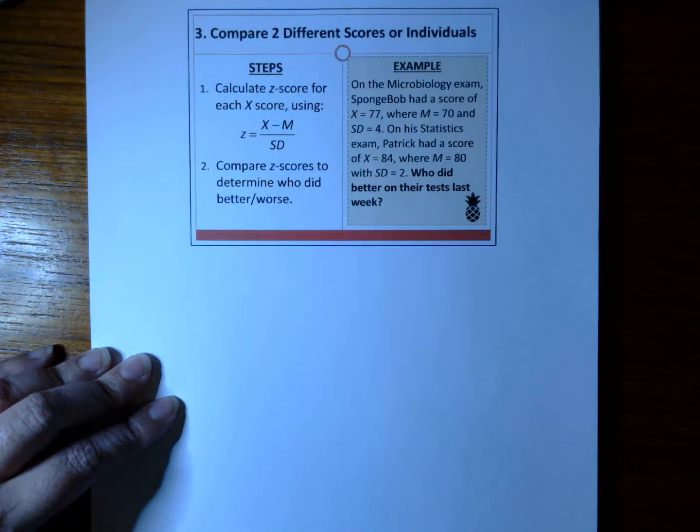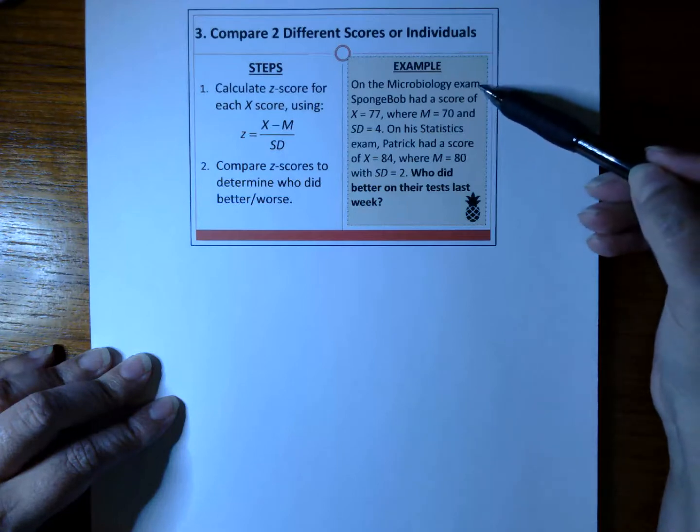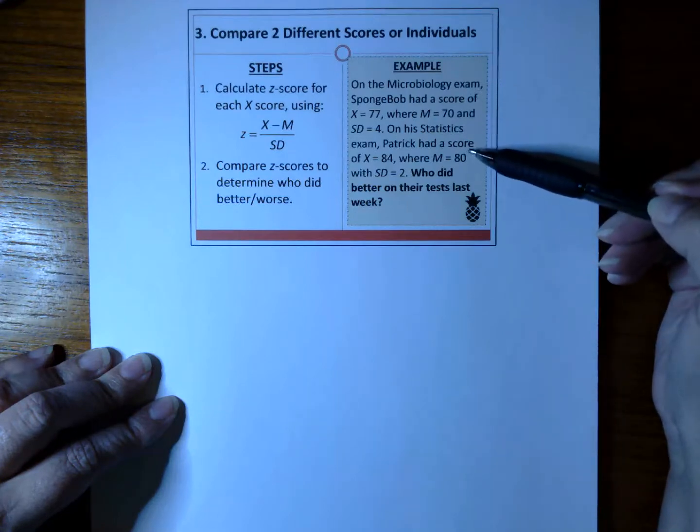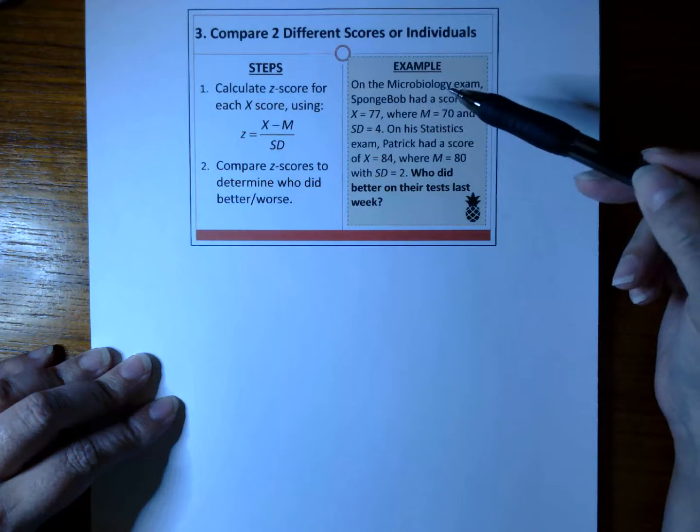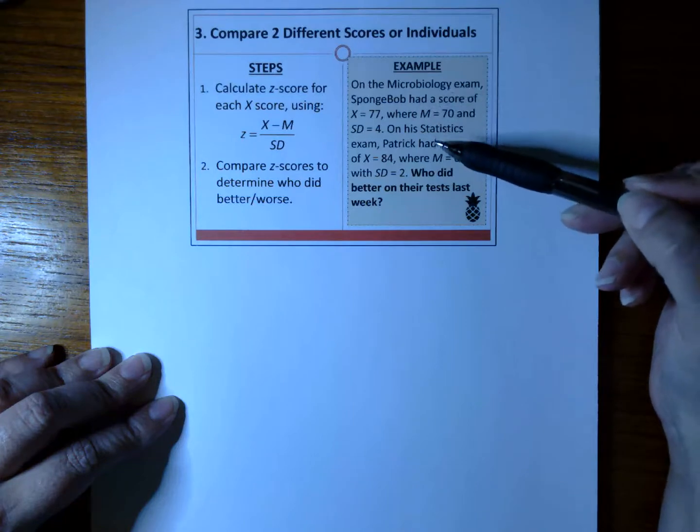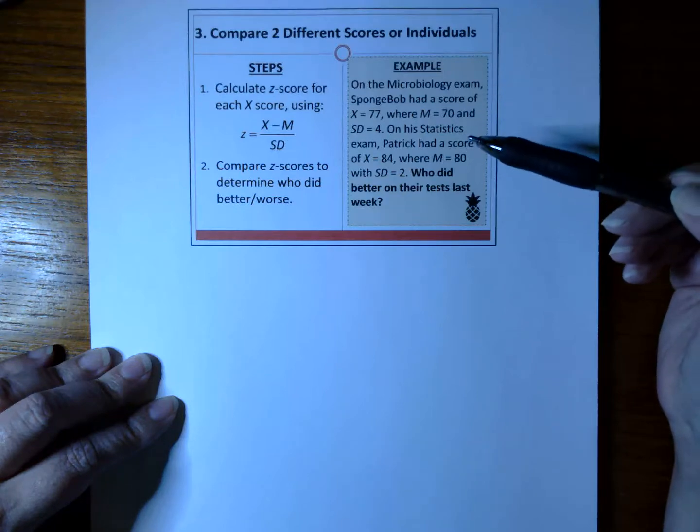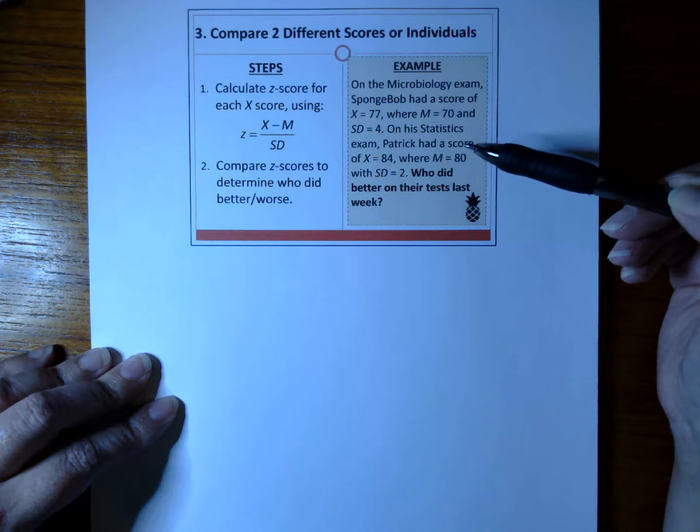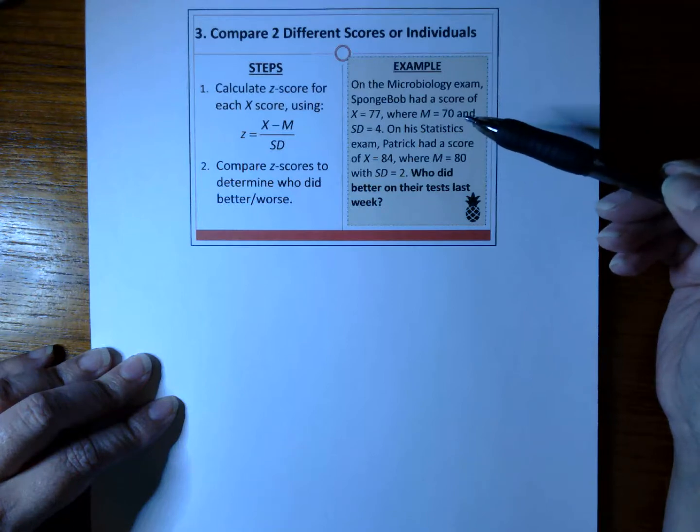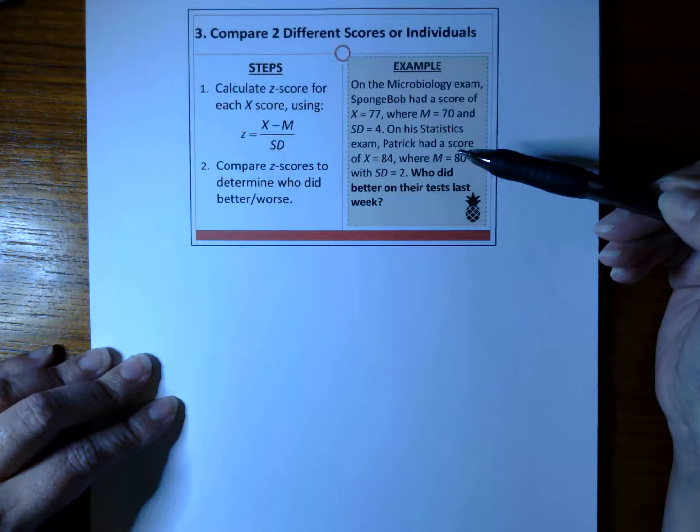In this example here, we're comparing SpongeBob and Patrick. SpongeBob had a microbiology exam, but Patrick had a statistics exam. Two different exams, two different scores, we can't really compare the two. In other words, SpongeBob's score on the microbiology exam is an apple, and Patrick's score on the statistics exam is an orange. We cannot compare apples to oranges.